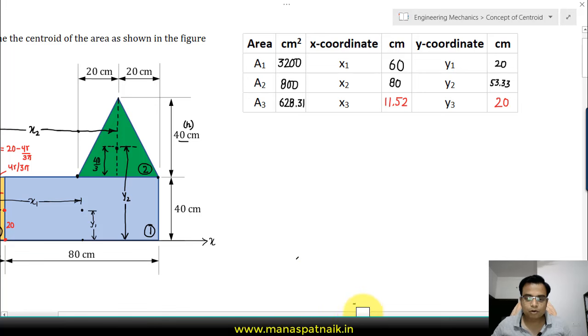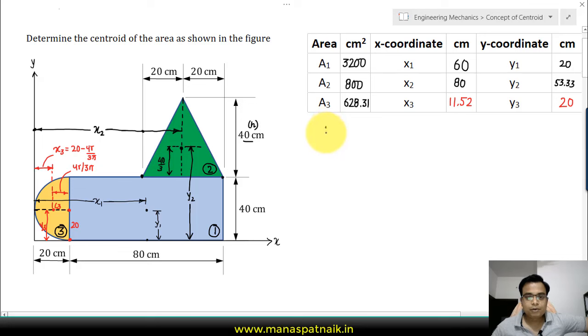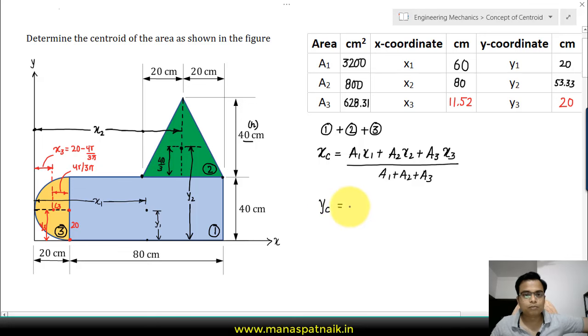One final step and we are almost done. Now what we are doing is finding the centroid of the composite figure by adding all three geometrical shapes. The formula for xc, the x-coordinate of the centroid, is going to be equal to A1·x1 plus A2·x2 plus A3·x3 over summation of all the areas, A1 plus A2 plus A3. In the same manner, yc equals A1·y1 plus A2·y2 plus A3·y3 all divided by A1 plus A2 plus A3.